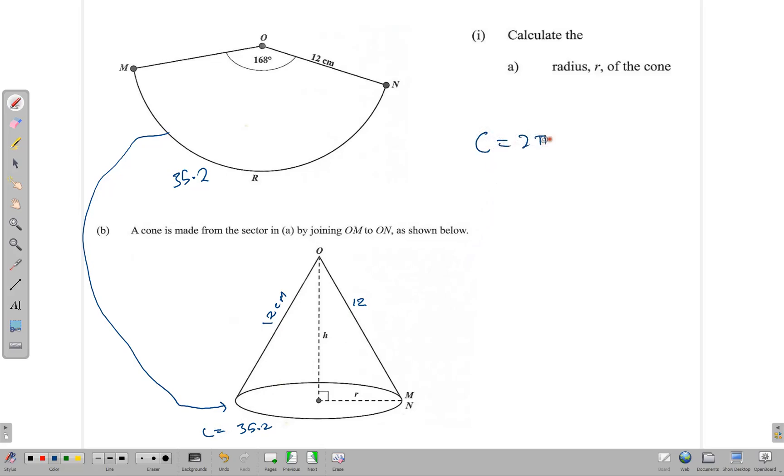We know that circumference can be calculated as 2πr. So our circumference is 2 × (22/7) × r = 35.2. Multiplying gives us (44r/7) = 35.2. Cross multiplication gives us 44r = 7 × 35.2, therefore r = (7 × 35.2)/44. Using your calculator, in the numerator we get 246.